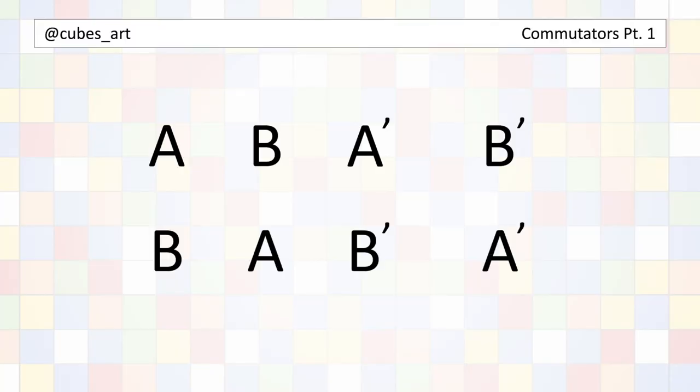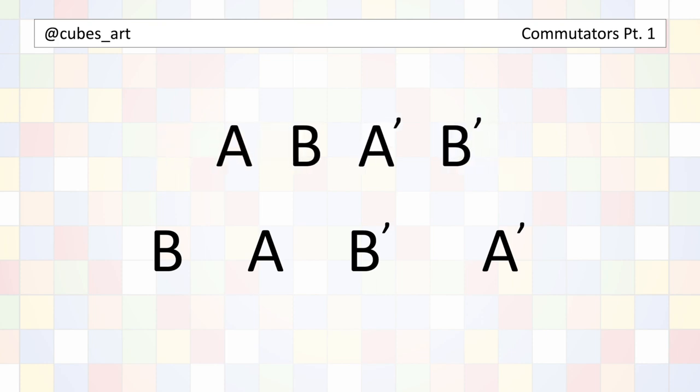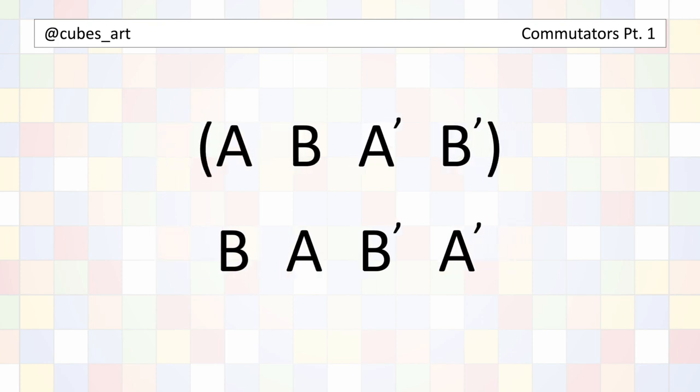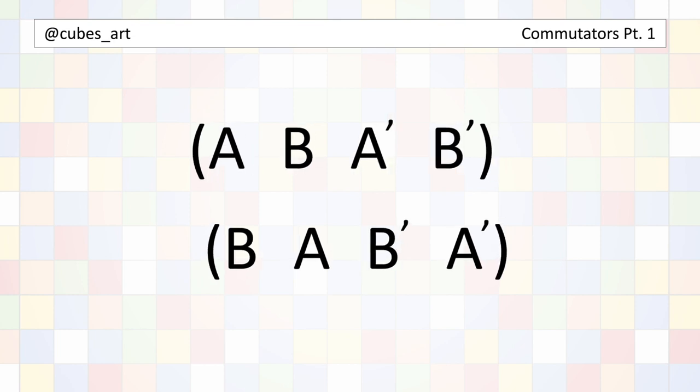Let's see why. So here I've written a commutator and a second commutator of the structure I described before. So we have A, B, A inverse, B inverse, and B, A, B inverse, A inverse.